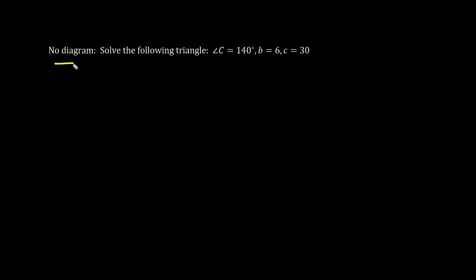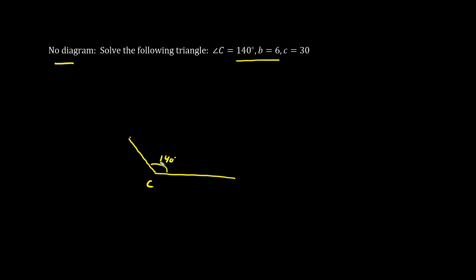Now we have no diagram. Let's solve this triangle, finding the angles and the sides. So we have an angle C which is 140. That 140 degrees is quite wide, so we're going to draw a triangle like this, and we'll call this angle C and label it 140 degrees — not quite 180, but bigger than 90. We have angle C here, and let's just extend out a line here, connecting these.